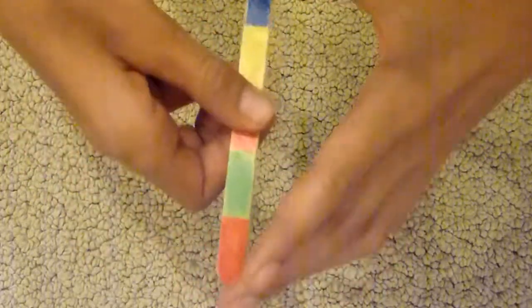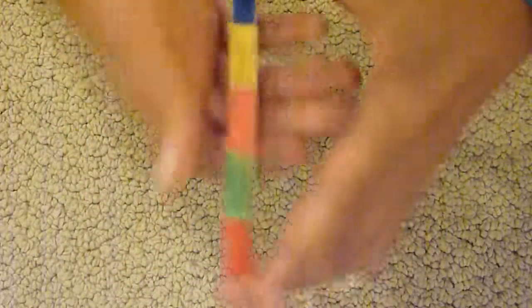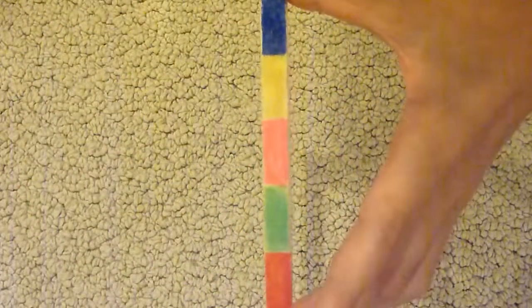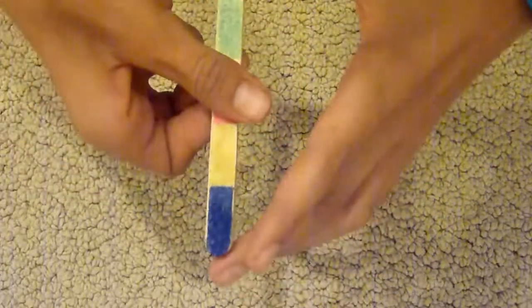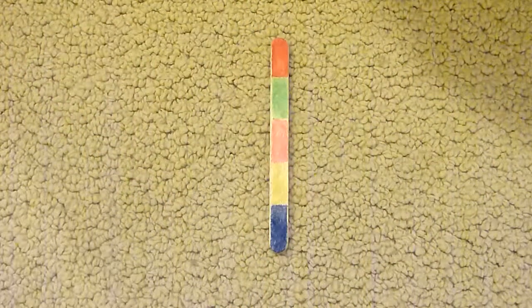So we rub it off, get this rainbow, rub it onto that side. Now watch, both sides are rainbow. Thank you for watching my video and I'll see you.